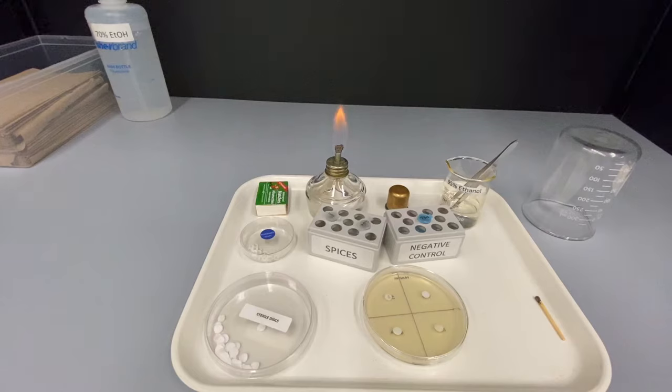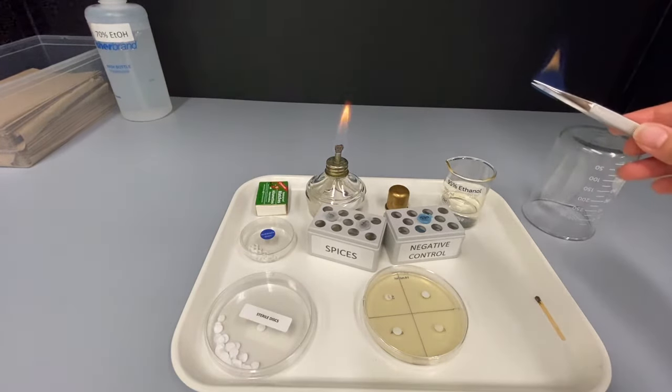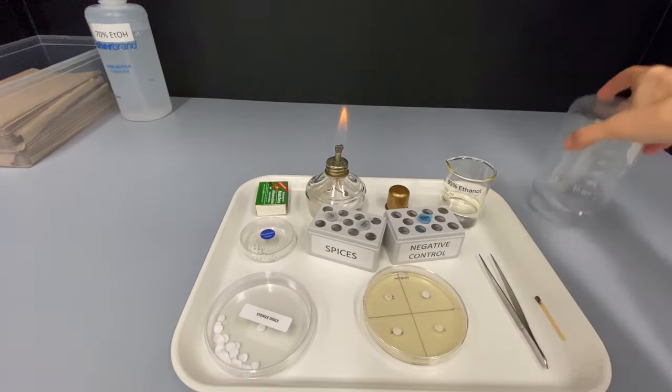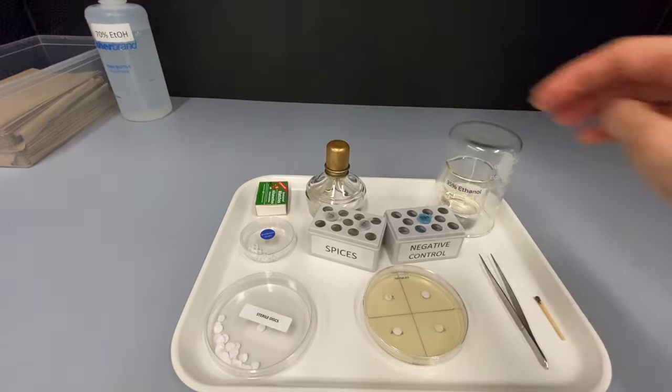Once all of the discs have been placed on the plates, dip the forceps into the 95% ethanol, pass it through the flame, wait for the ethanol to burn off and return the forceps to the tray. Cover the 95% ethanol and extinguish the flame by covering it with the cap.